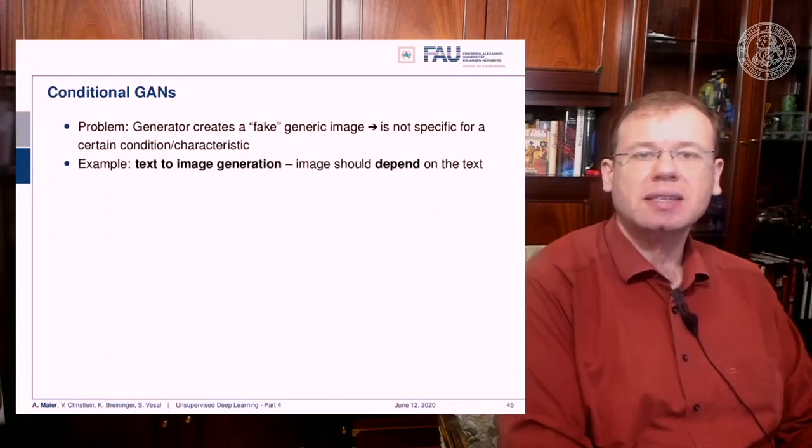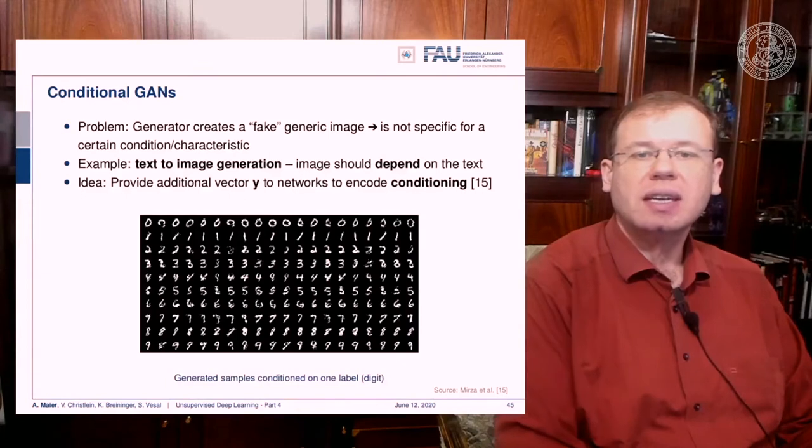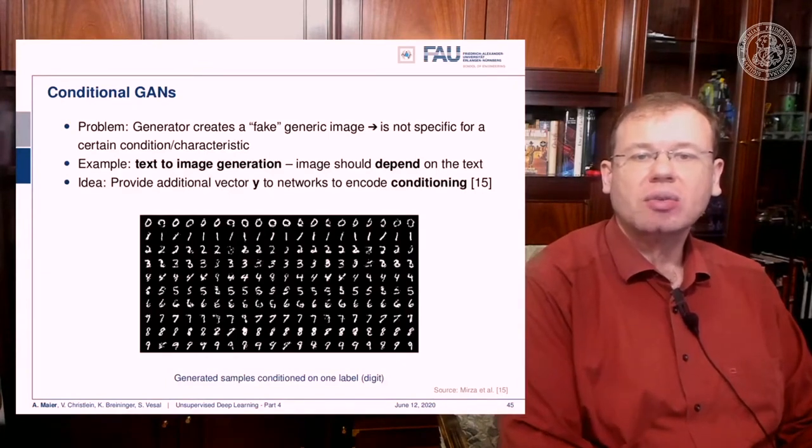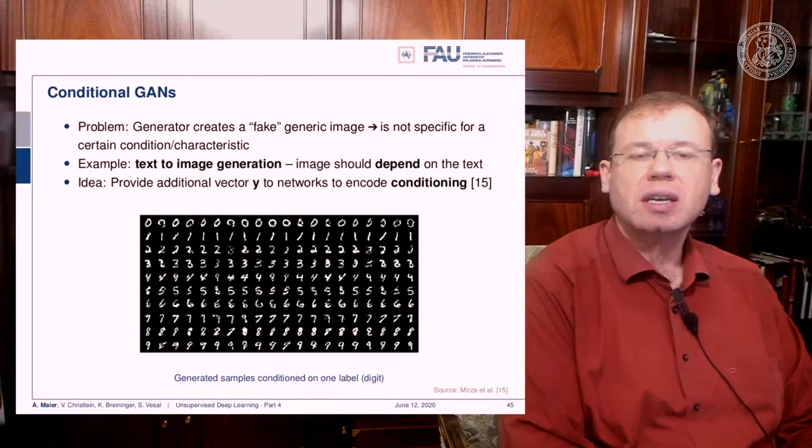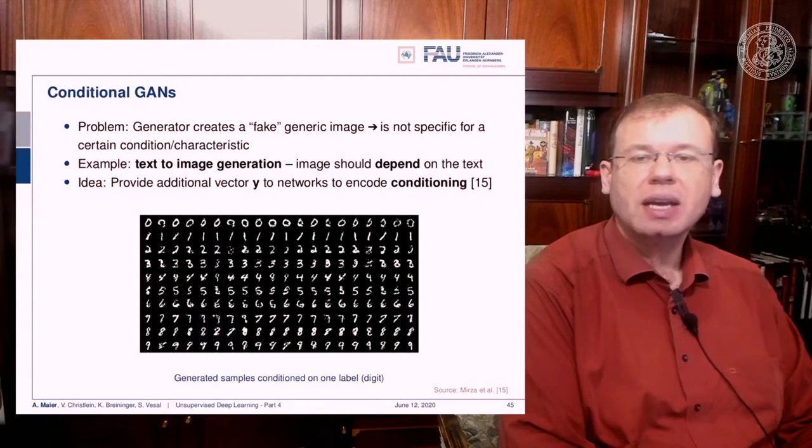If you want to generate zeros, you don't want to generate ones, so you need to put in some condition whether you want to generate the digit zero, one, two, three, and so on. This can be done by encoding conditioning, which is introduced in reference 15.